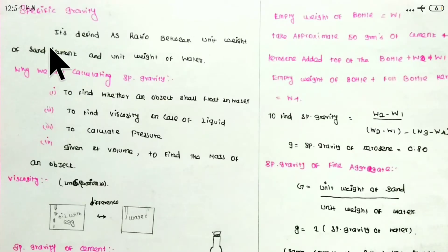There is a ratio between unit weight of sand and unit weight of water. We can find specific gravity for sand, water, and cement. We can also find viscosity, calculate pressure, and find the mass of an object in terms of volume.